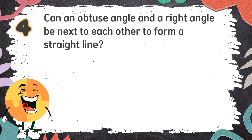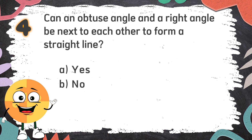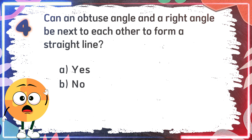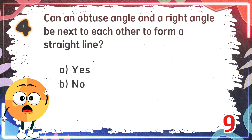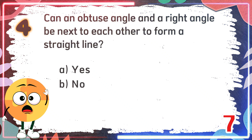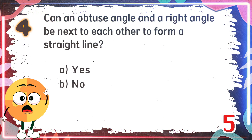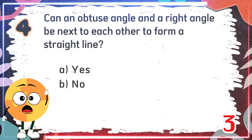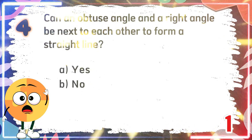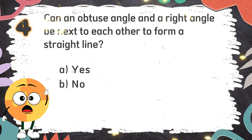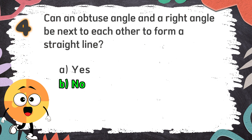Number 4: Can an obtuse angle and a right angle be next to each other to form a straight line? The choices are: A. Yes, B. No. The correct answer is B. No.